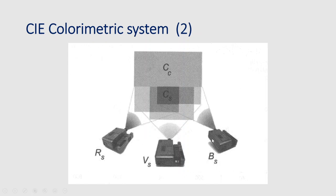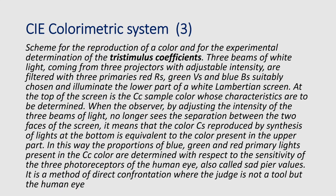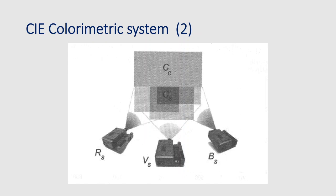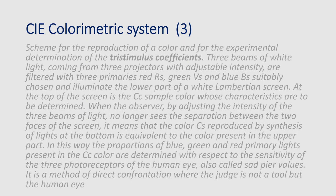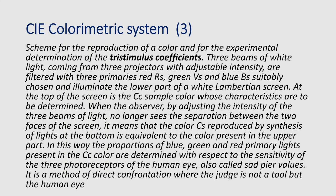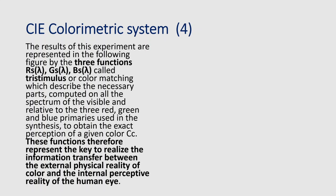This is the scheme for reproducing a color based on the experimental determination of the three tristimulus coefficients. We have three different projectors, and our eyes — in particular our three kinds of cones — are stimulated differently based on the three subcomponents of the visible: red, green, and blue. That is why this system is based on what is called the tristimulus coefficient: the stimuli in the three subspectral bands of the visible.